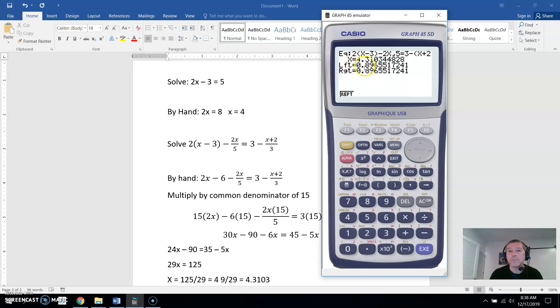And we get 4.310, sorry, 4.3103. And if you look here on the paper, you can see I did this problem by hand, which is a real mess, and I got 4.3103. So I got the exact same answer.